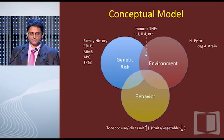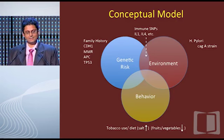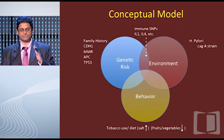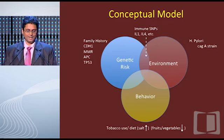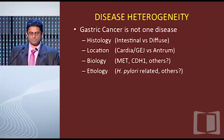Conceptually, from a genetic risk standpoint, we have CDH1, mismatch repair, and APC. We have immune modulatory SNPs that lie between genetic risk and environment. On the environment side, we have H. pylori and the CAG-A strain. And then behavior — fruits and vegetables, for example, reduce your risk. So we're filling this Venn diagram out.